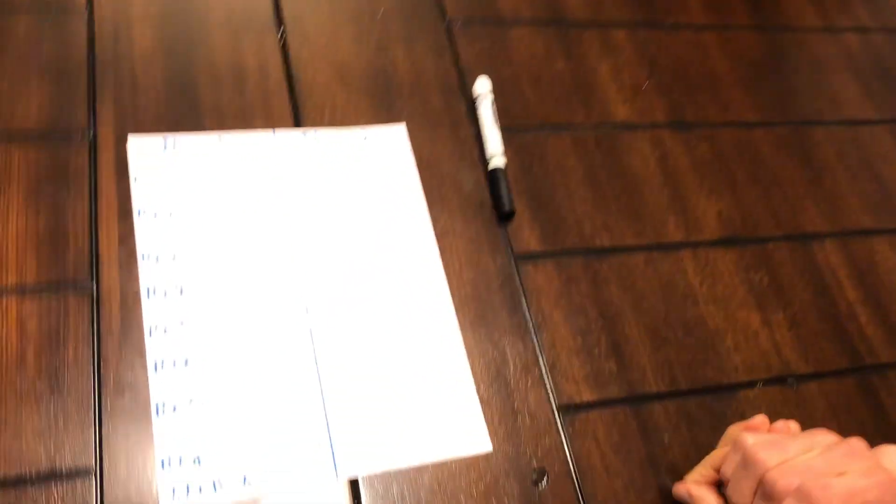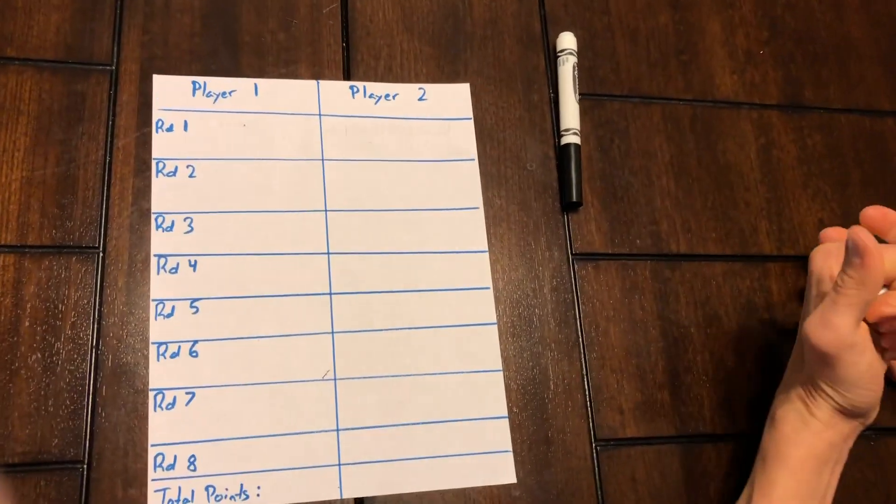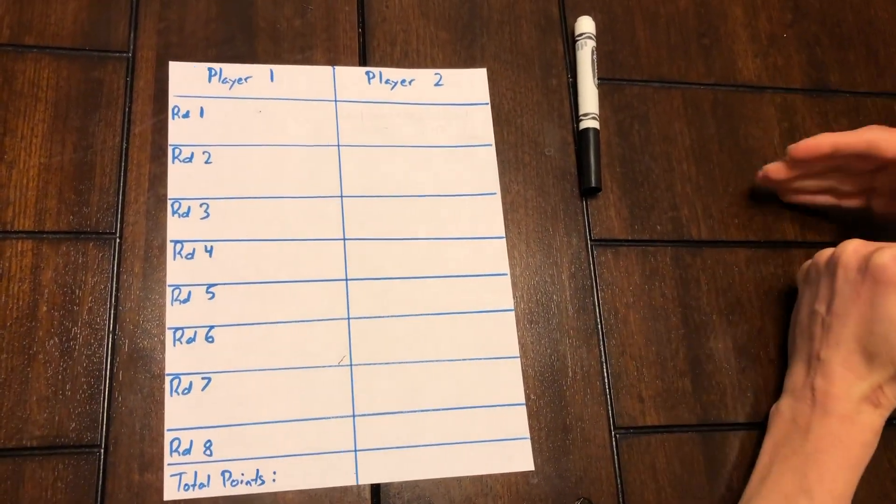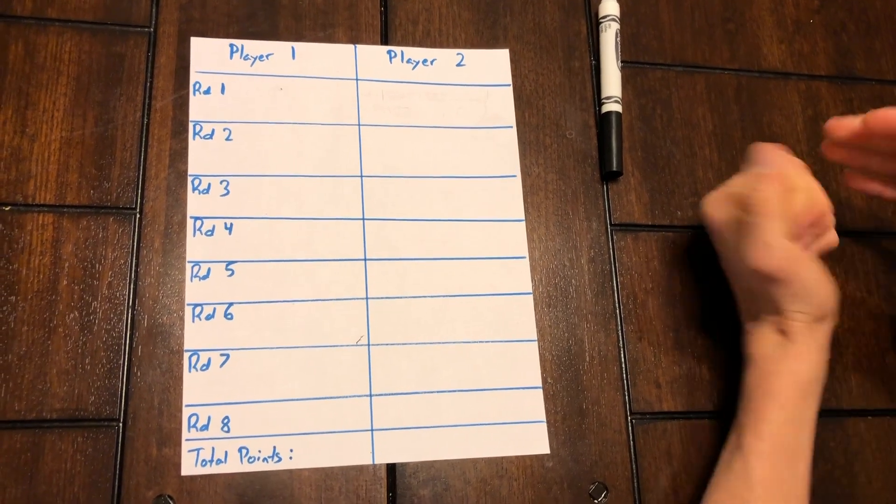The objective of the game Anything But Eight is to obtain the most points by rolling and adding your rolls together without rolling an eight. Here's how it's going to look. You want to set up your scoreboard to keep track of the game something like this. We're going to play eight total rounds of the game, and you can have more than two players, but that's what I have it set up for.